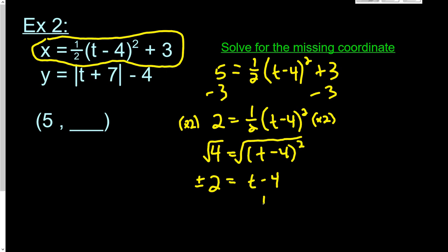So then I'm going to add 4 to both sides to get t all by itself. And I'm going to end up with 2 different answers. So if we're dealing with 2 instead of negative 2, 2 plus 4 is 6. So at time 6, the x value will be 5.